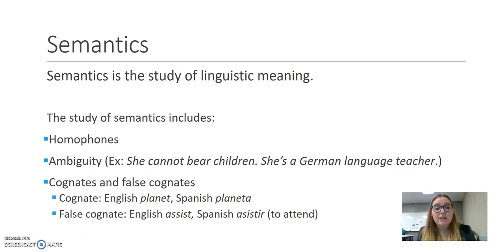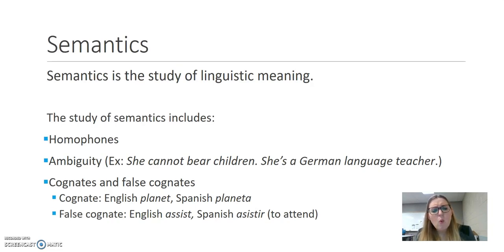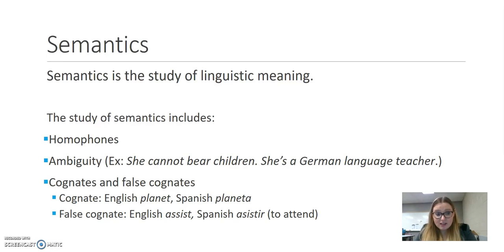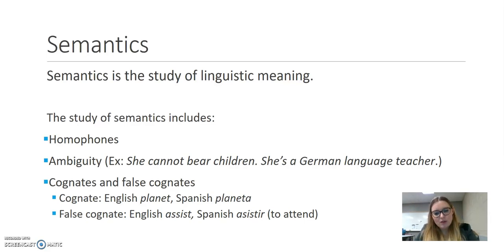Then we have semantics — the study of linguistic meaning. This can include homophones like 'there,' 'their,' and 'they're,' which are involved in ambiguity. For example, 'she cannot bear children' means something different depending on context. Similarly, 'she's a German language teacher' — is she a teacher of German, or a German person who teaches language? Semantics also covers cognates and false cognates. We love cognates like 'planet' and 'planeta,' but false cognates throw us off — like 'asistir' in Spanish, which means to attend, not to help. Semantics is figuring out what words mean.